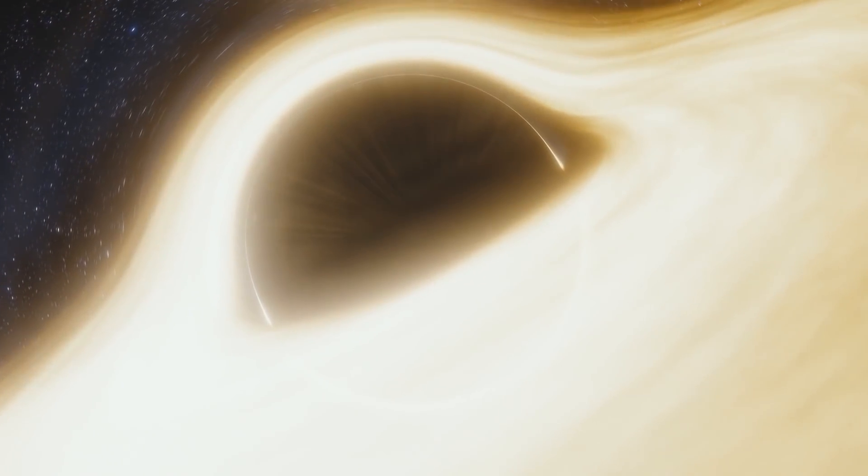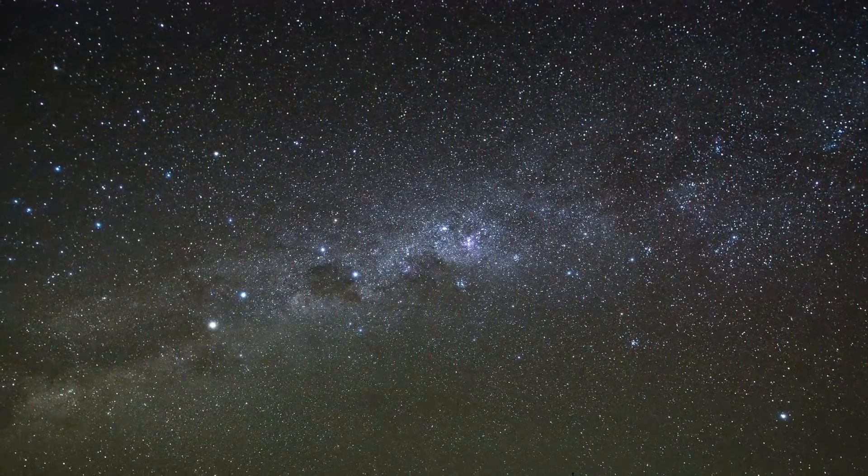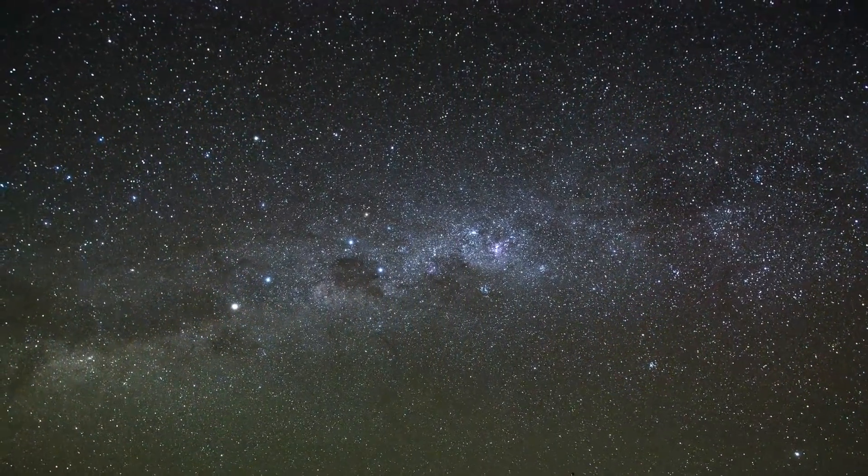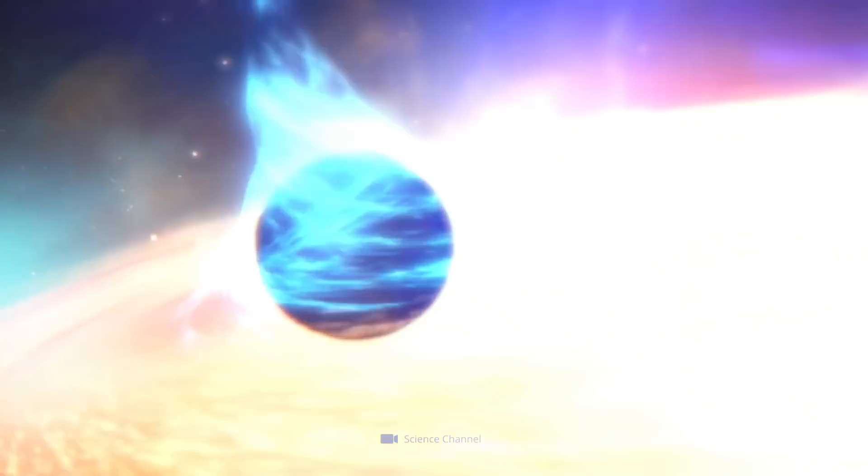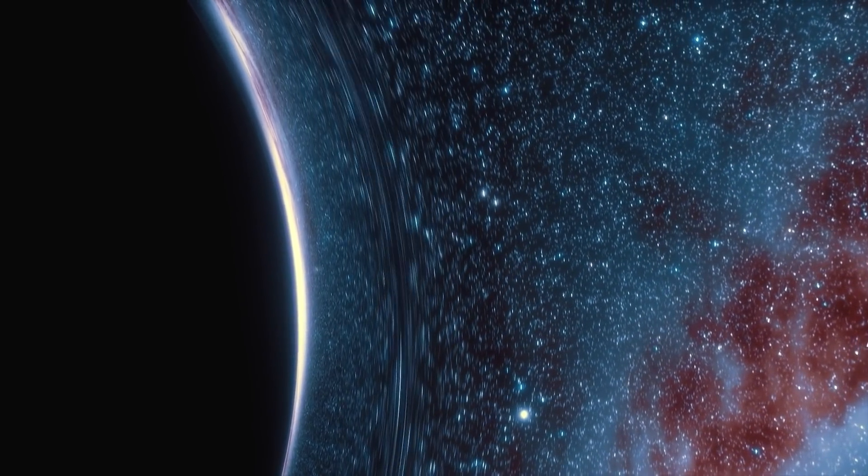And even if the probe succeeded to advance intact into the inside of a black hole, there would be no possibility for it to transmit the data collected there afterwards in the direction of Earth. The basic rule is that nothing can cross the event horizon of a black hole from the inside to the outside.